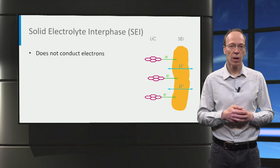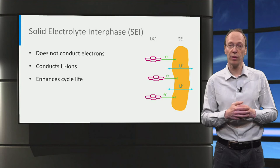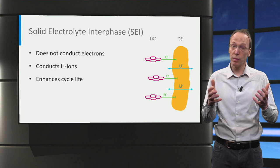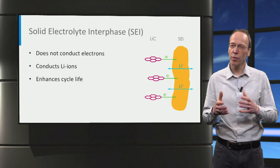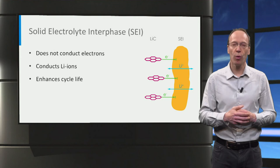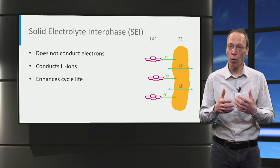The SEI should not conduct electrons, to protect the rest of the electrolyte from the graphite electrode potential. In that case, the electrolyte decomposition is passivated, very similar to a thin aluminum oxide layer that prevents aluminum from oxidizing further when exposed to air. The SEI should conduct ions, allowing the necessary lithium-ion transport during battery charge and discharge. Electrolytes are optimized to form a stable, electronically insulating, and lithium-ion conducting SEI, all aiming at a long battery cycle life.